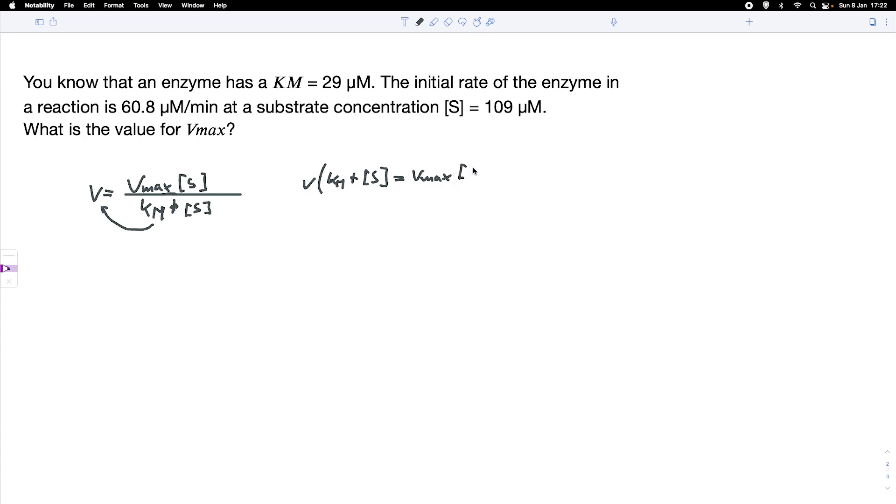So Vmax equals V times Km plus the substrate concentration, divided by the substrate concentration. That's the equation for our Vmax.